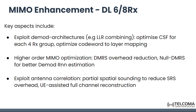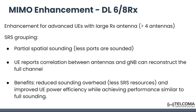Another aspect is exploiting antenna correlation via partial spatial sounding to reduce SRS (sounding reference signal) overhead, and UE-assisted full channel reconstruction. In partial spatial sounding, fewer ports are sounding; the UE reports the correlation between the antennas and the gNodeB, which can then reconstruct the full channel. The benefit is reduced sounding overhead and improved UE power efficiency, achieving performance similar to full sounding.